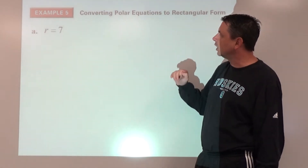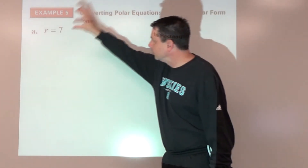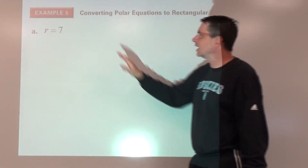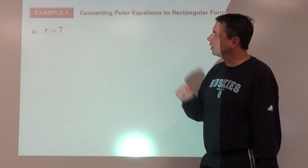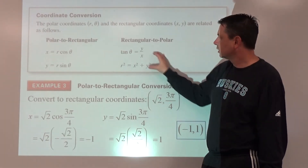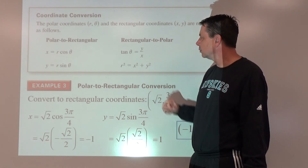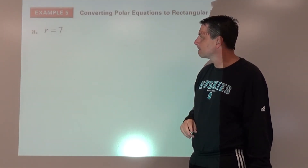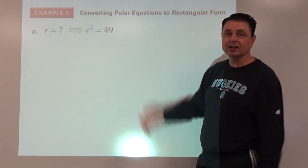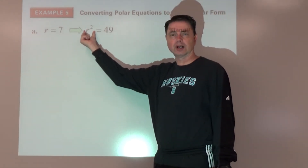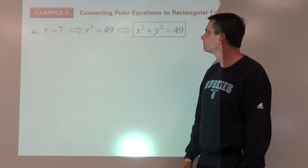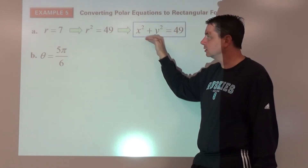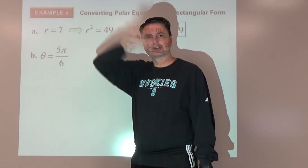Example number five: convert polar equations to rectangular form. Part a: r equals 7. We know r squared equals x squared plus y squared, so if we square both sides we get r squared equals 49, which becomes x squared plus y squared equals 49. That's the equation of a circle with radius 7.